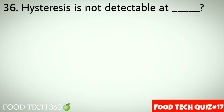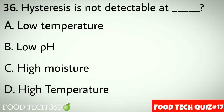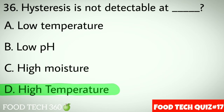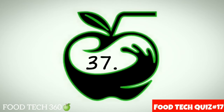Question number 36: Hysteresis is not detectable at dash. Options: A. Low temperature, B. Low pH, C. High moisture, D. High temperature. Correct answer: D. High temperature.